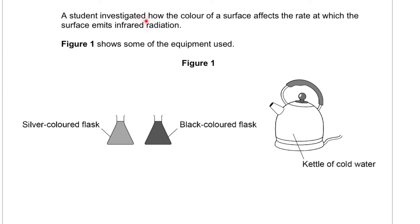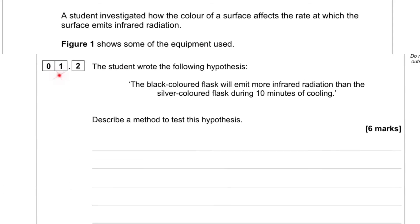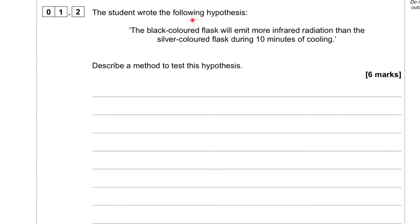A student investigated how the color of its surface affects the rate at which the surface emits infrared radiation. Figure 1 shows some of the equipment used. Question 1.2: The student wrote the following hypothesis — the black-colored flask will emit more infrared radiation than the silver-colored flask during 10 minutes of cooling. Describe a method to test this hypothesis.